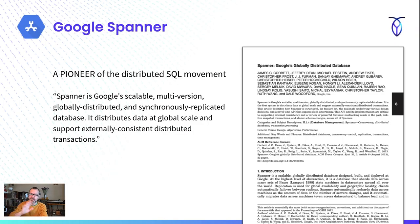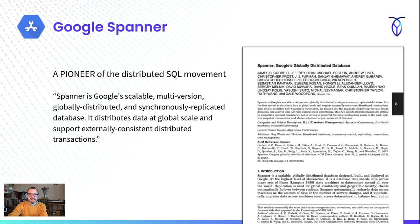First of all, Spanner is just an amazing database. This is the pioneer of this whole distributed SQL movement. If you go and want to read a really wonderful paper, the Google Cloud Spanner white paper is really, really fantastic. The way that Google describes it: Spanner is a Google scalable, globally distributed and synchronously replicated database. It distributes data at global scale and supports externally consistent distributed transactions.